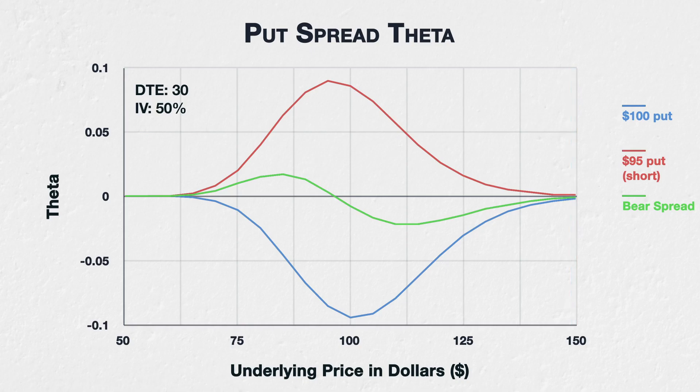Notice also that even though the passage of time still has an effect on the spread, because the theta of each leg partially cancels each other out, the magnitude of the effect of time is considerably less than for either of the individual options. This behavior of reducing the effect of certain greeks can make certain option spreads more attractive than naked options in certain circumstances — more to come on that theme in later sections.